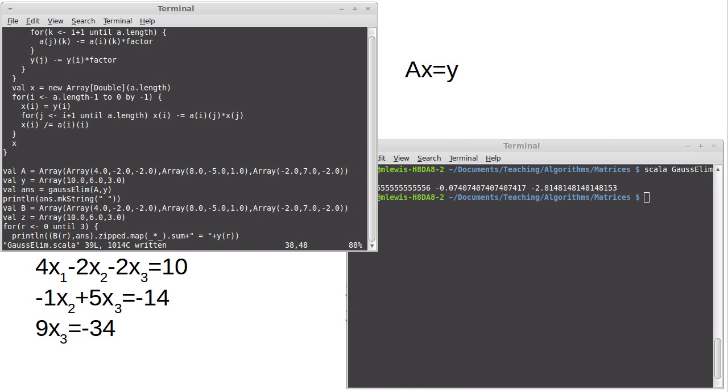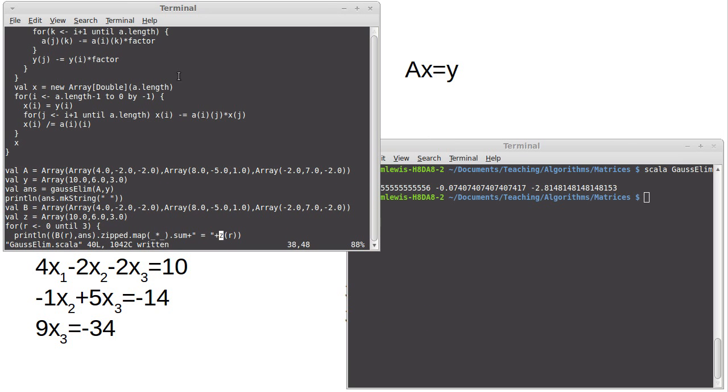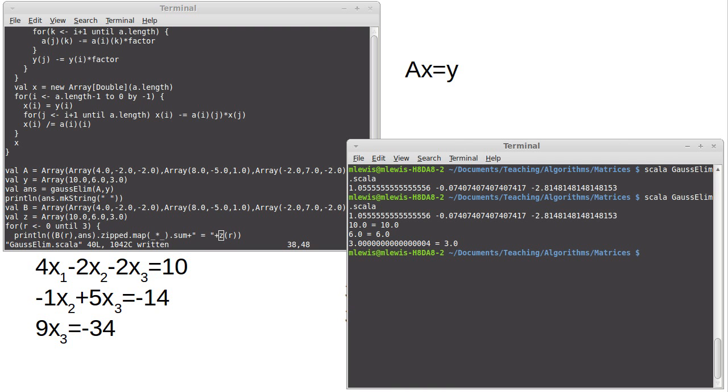We'll call this z. What I had before was actually checking to see if the values matched what we had at the end of our Gaussian elimination. To be really careful, I'd like to make sure that it matches what I had at the beginning, my original set of equations. And... Excellent. So 10, which is the, you know, which winds up being the 4 times this 1.055, minus 2 times this value, minus 2 times this value. Well, that gave us a 10. We got a 6. We wanted a 6. And we got a 3.0000004, where we wanted a 3.